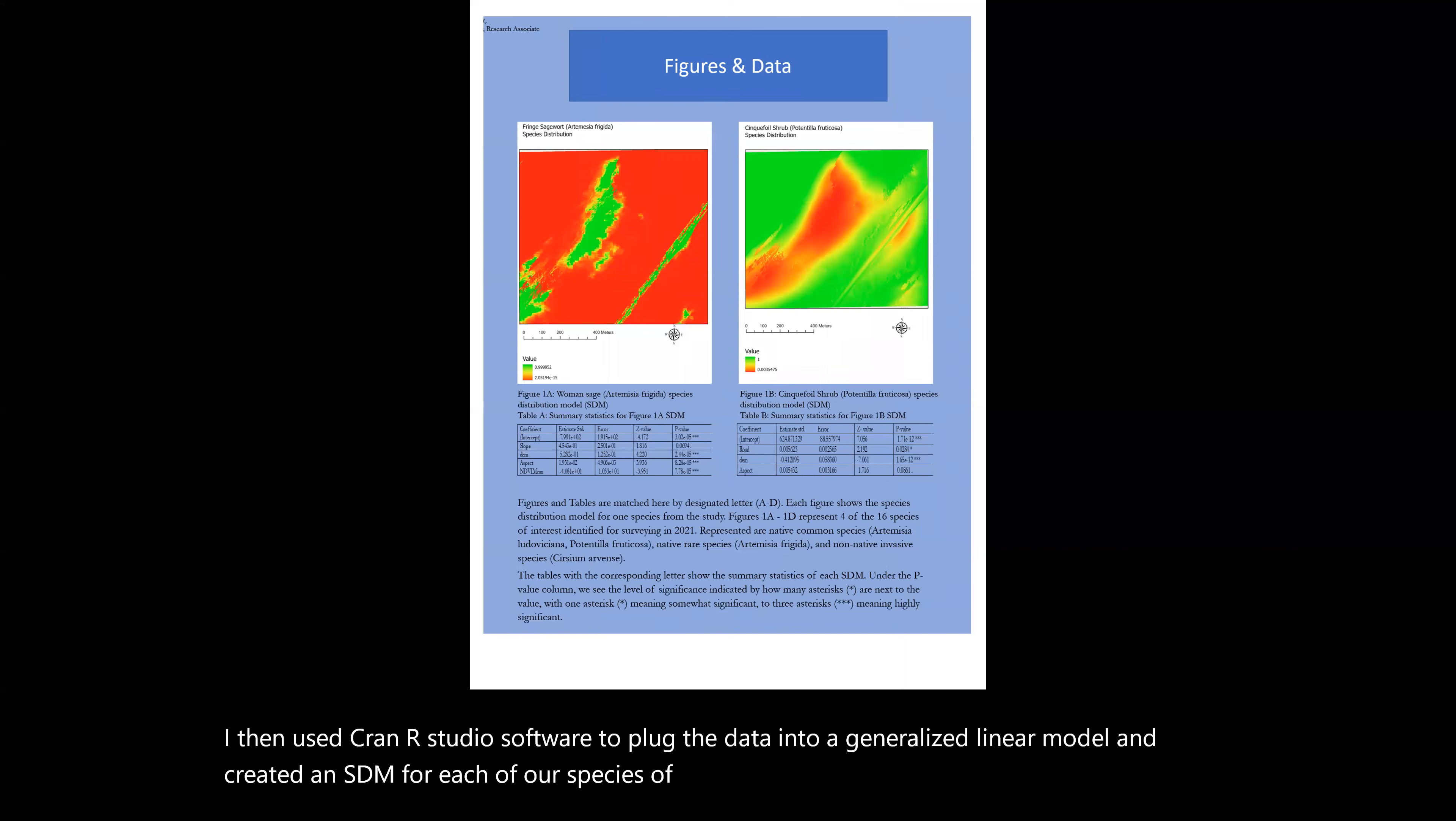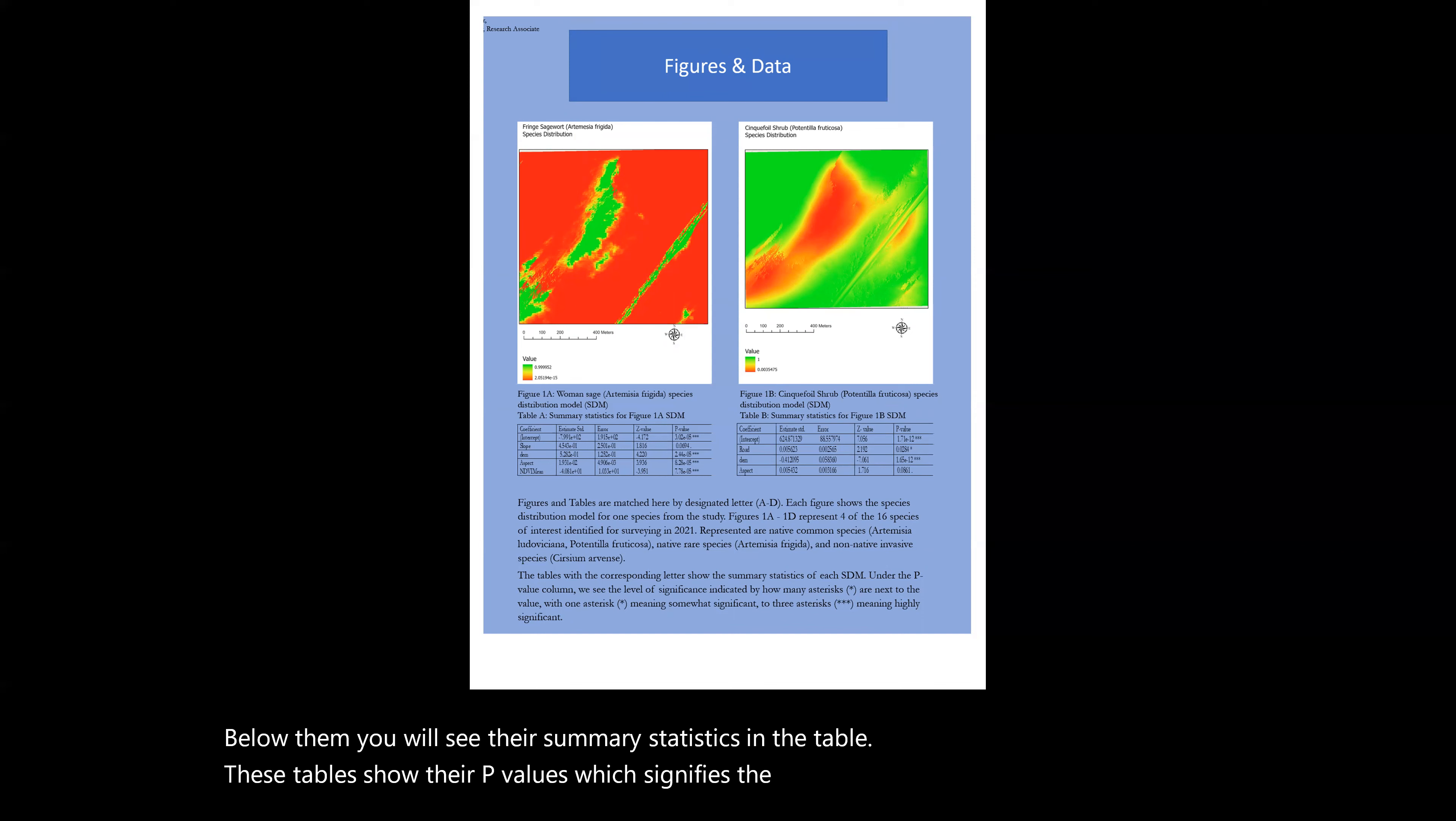Here, we see two of those SDMs. On the left, frigid sagewort, which is Artemisia frigida, and on the right, shrubby cinquefoil, which is Potentilla fruticosa. Below them, you will see their summary statistics in a table. These tables show their p-values, which signifies the significance of the relationship between each of the variables and the predicted outcome, aka vegetation distribution.